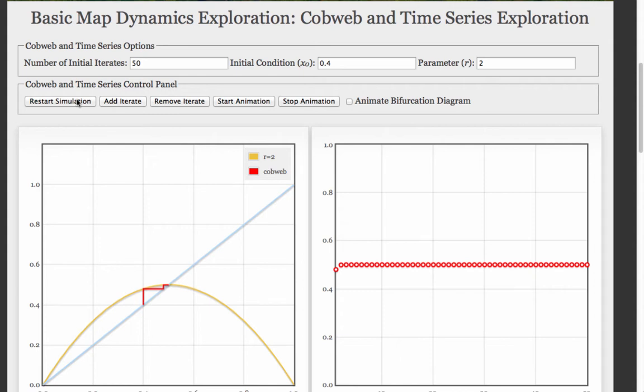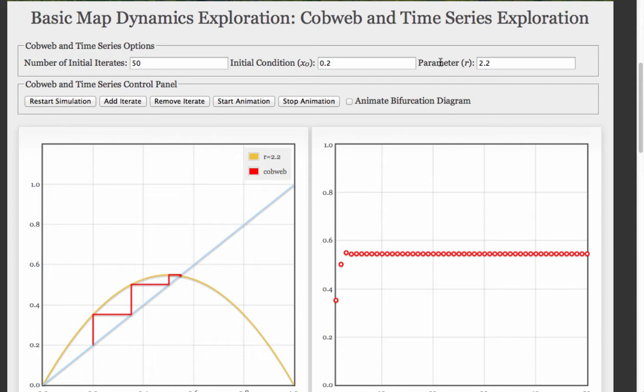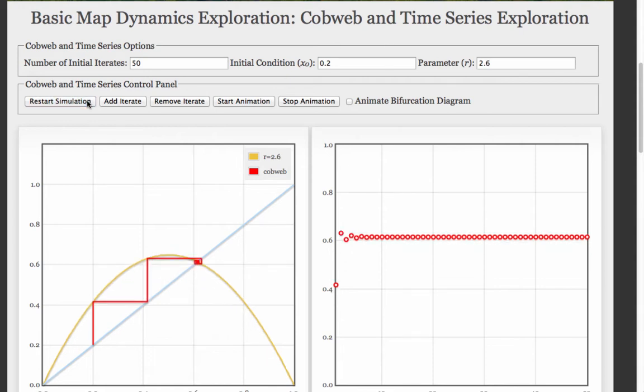Now what I'm going to do is raise the R parameter slowly and show you what happens. I'm going back where we started with the initial condition 0.2 and the R parameter value of 2 and raise R to 2.2, then 2.4, 2.6. We start seeing that oscillatory convergence that I mentioned in the last segment.